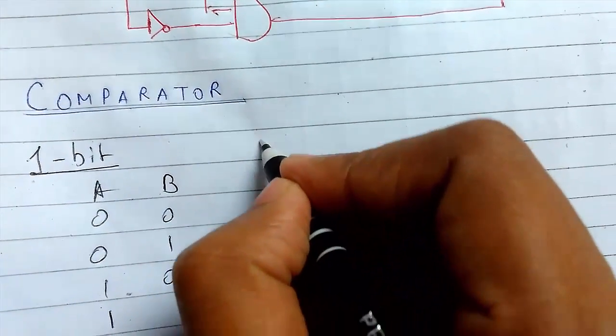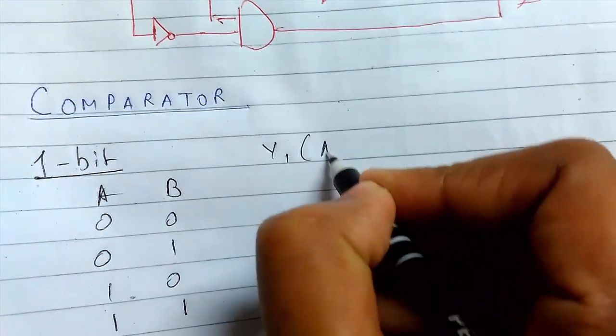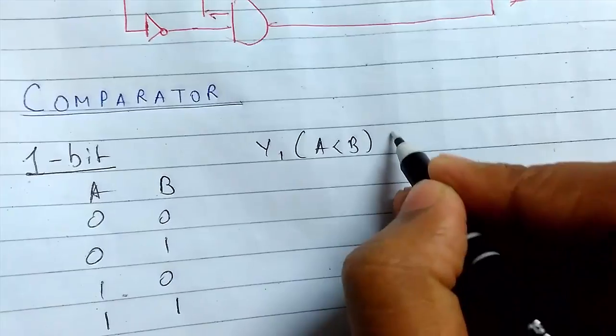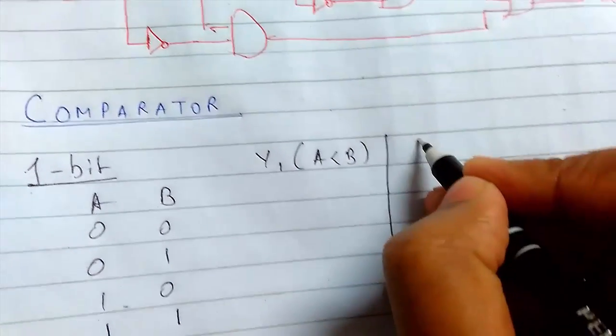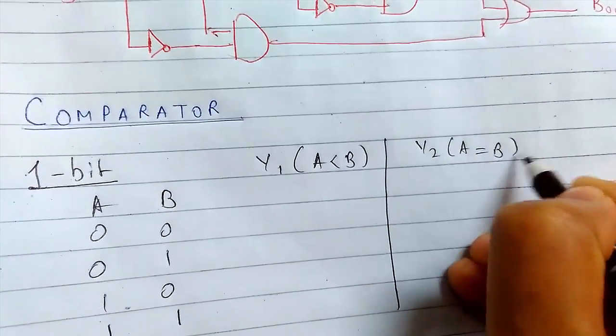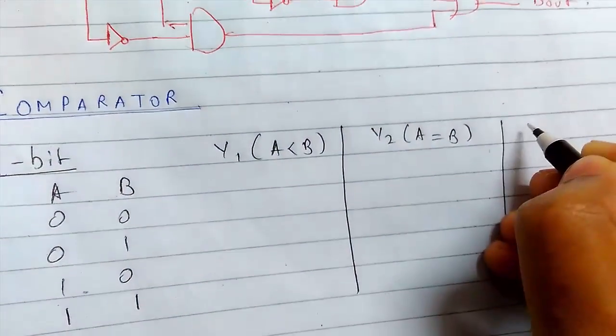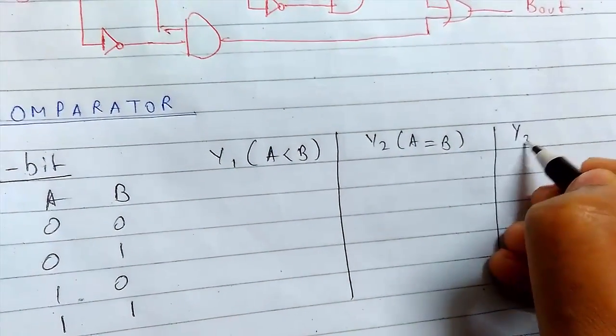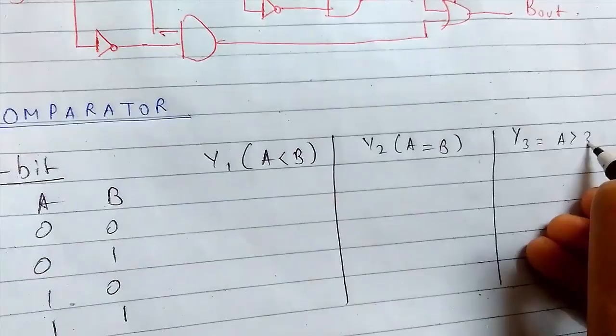Suppose I am writing like y1 is for A less than B, for that case when A will be less than B. Y2 is when both the binary numbers are equal and y3 is when A is greater than B.